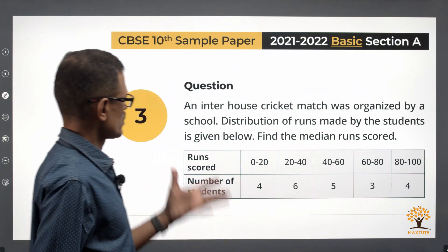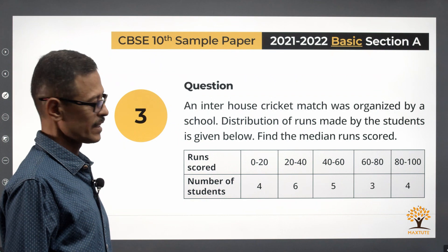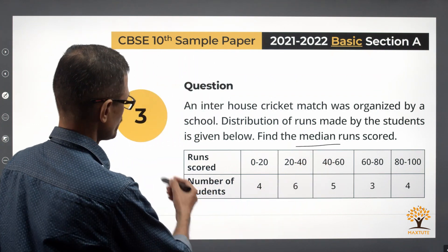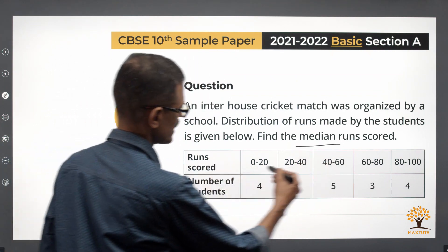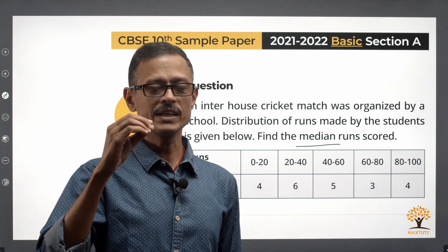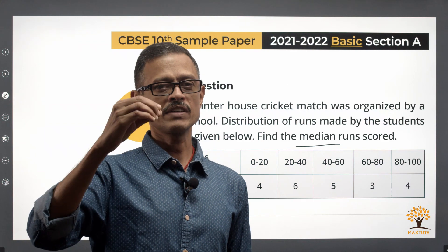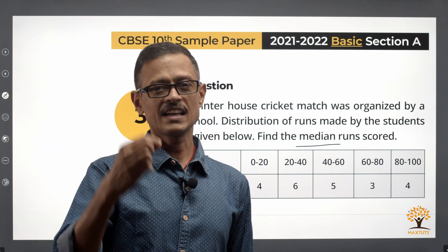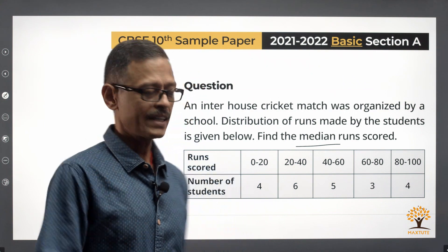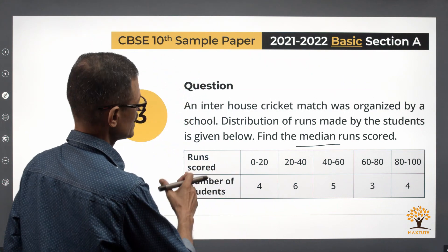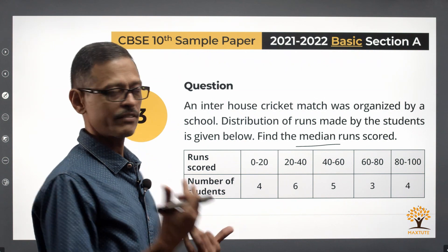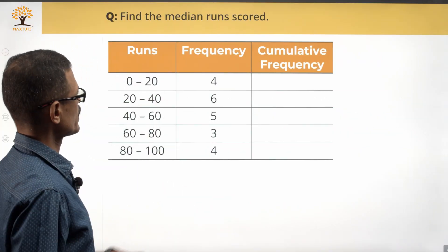An inter-house cricket match was organized and this is the distribution of runs made by them. What we need to find out is the median runs scored. So we essentially have an exclusive class frequency table. For the median, we need to start by finding the cumulative frequency so that we can determine which class the middle number lies in — where does n/2 lie? To do that, we need to convert this exclusive class frequency table into a cumulative frequency table.